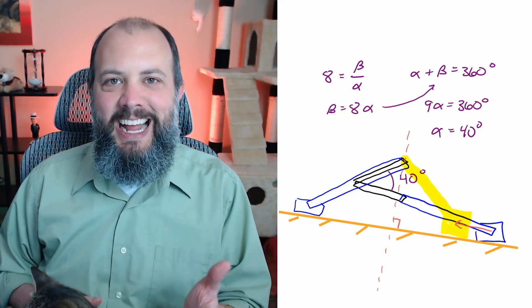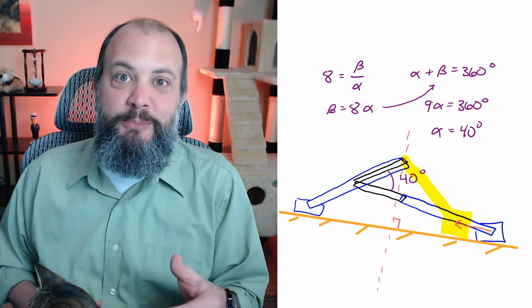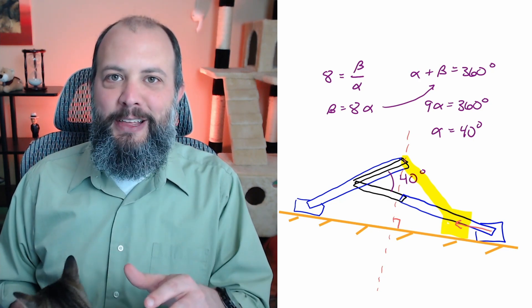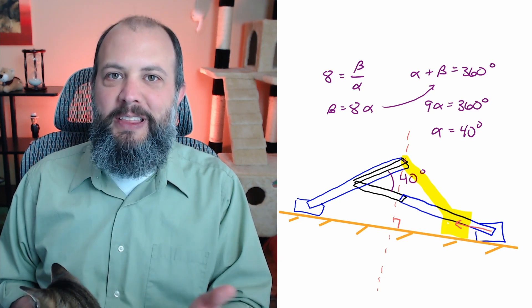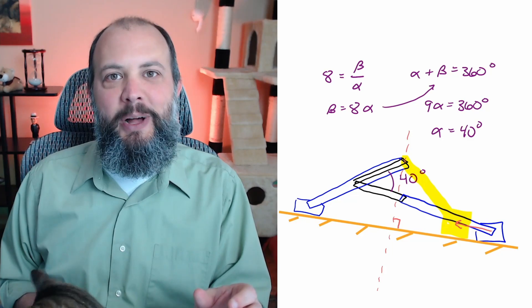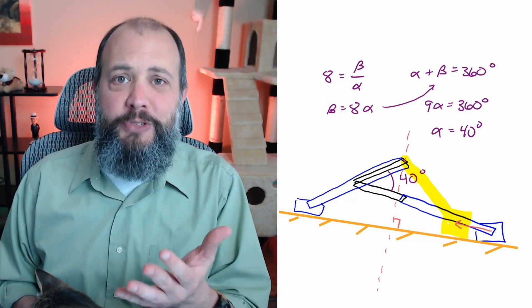So if you actually built this design that based on this graphical technique seems like it should lead to an eight to one time ratio, you would actually find that the point that you thought was going to be the max retracted position, one of the toggle locations, is actually just an intermediate spot only a few inches from where you started.